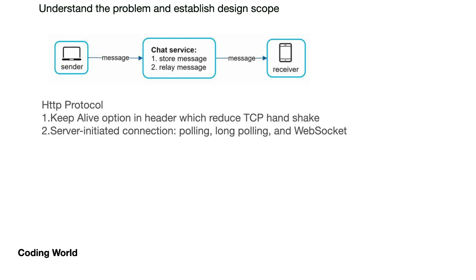We are using the HTTP protocol with the header kept as keep-alive, which makes authentication simpler — you will not require to authenticate with the chat service every time. For server-initiated connections, whenever you push a message to your service there will be some polling from your server or from your receiver. For that we use strategies such as polling, long polling, and WebSocket. We will see advantages and disadvantages of each and then conclude which one to use.